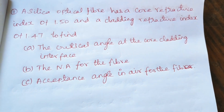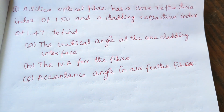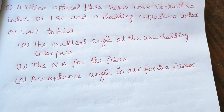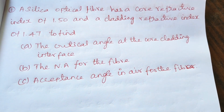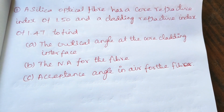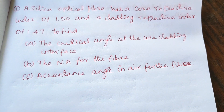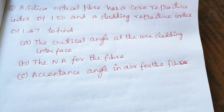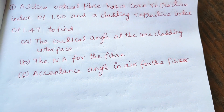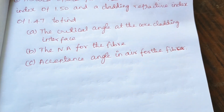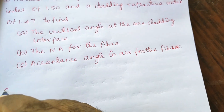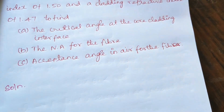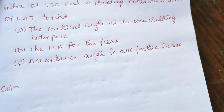Hi friends, this is the Fiber Optics Lab. A silica optical fiber has a core refractive index of 1.5 and a cladding refractive index of 1.47. We need to find the critical angle at the core-cladding interface.